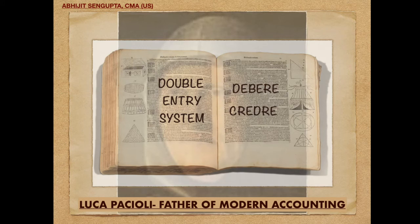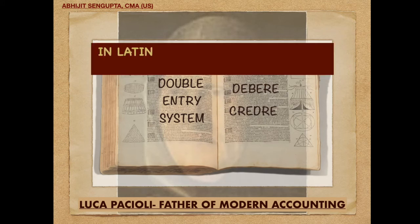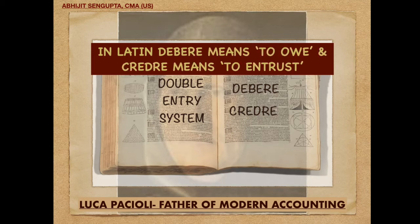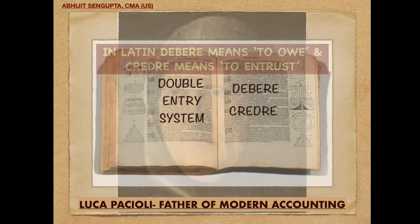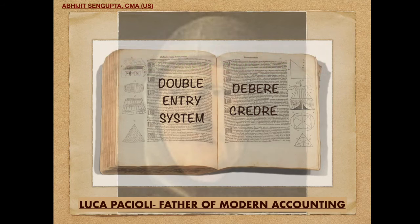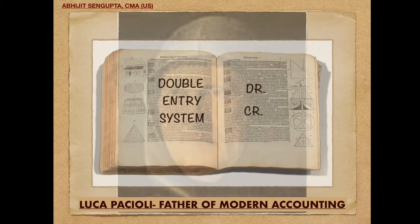This was in Latin. So in Latin, the word 'debere' means 'to owe' and the word 'credre' means 'to entrust.' These two words started to be used. And as we moved on, we started to write these words in short — 'debere' became DR, and 'credre' became CR. And this way, they started to write in shortcut.